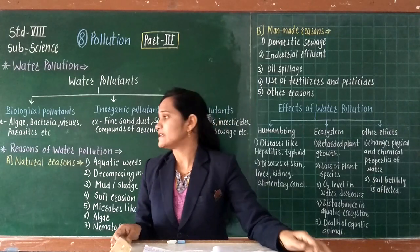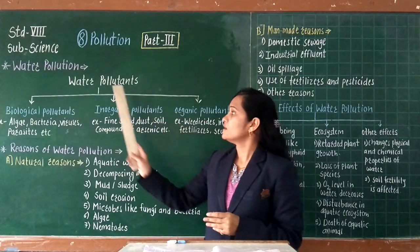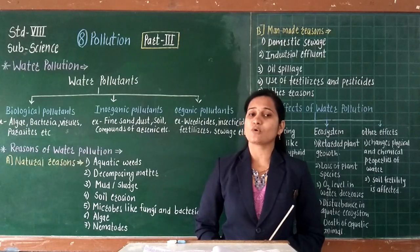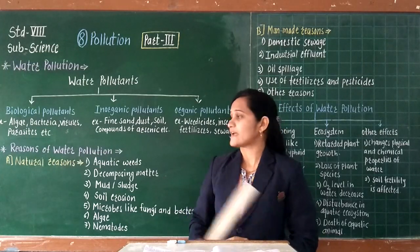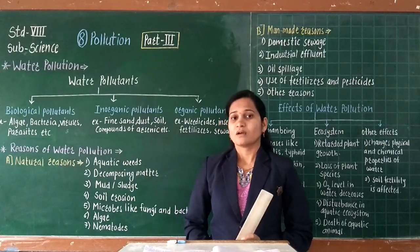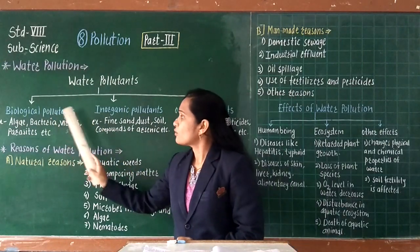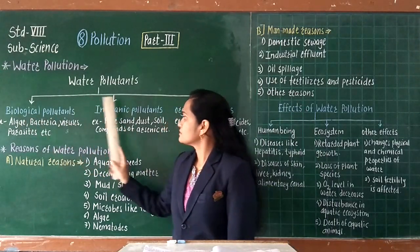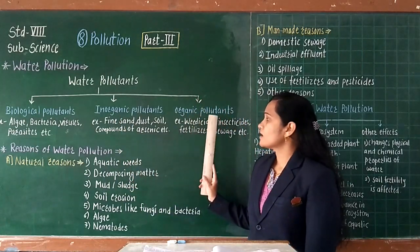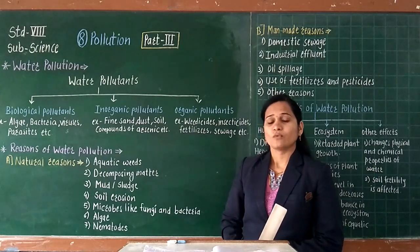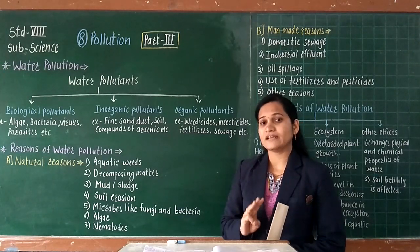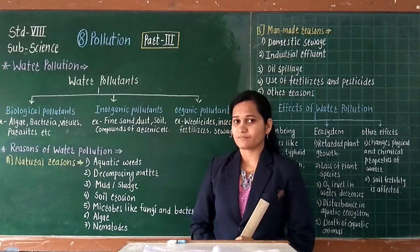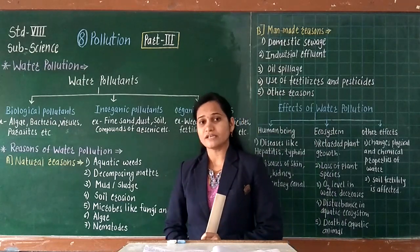In the next point, we will take information related to water pollutants. Water pollutants means the substances which are responsible for causing pollution of water. There are a total of three types of water pollutants: the first one is biological pollutants, the second is inorganic pollutants, and the third one is organic pollutants. Now let us see examples related to each type.